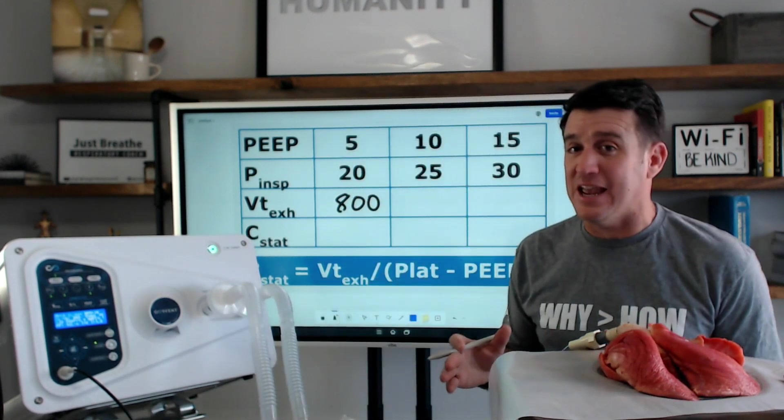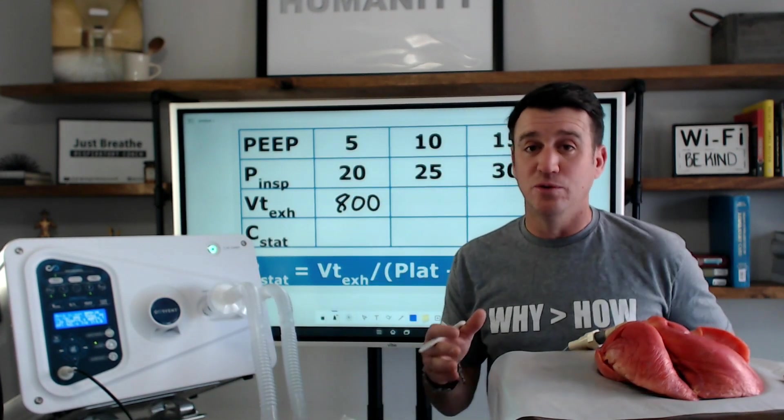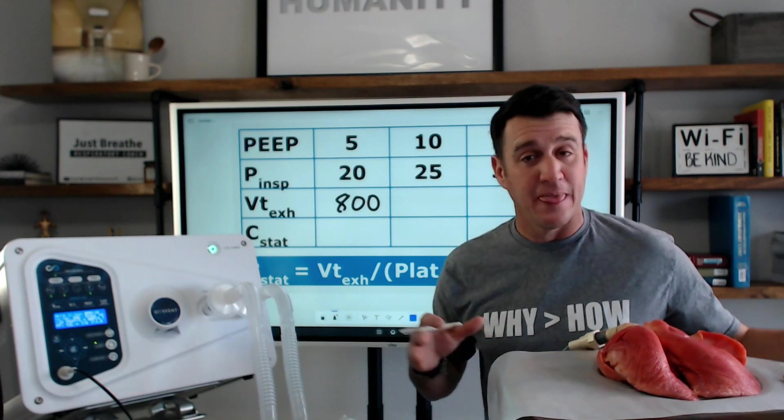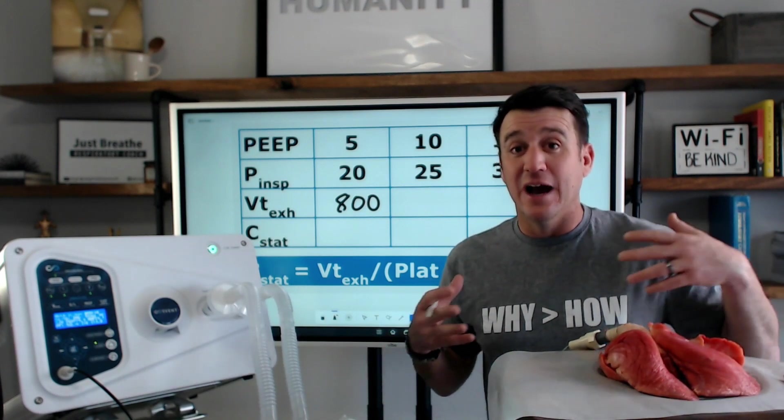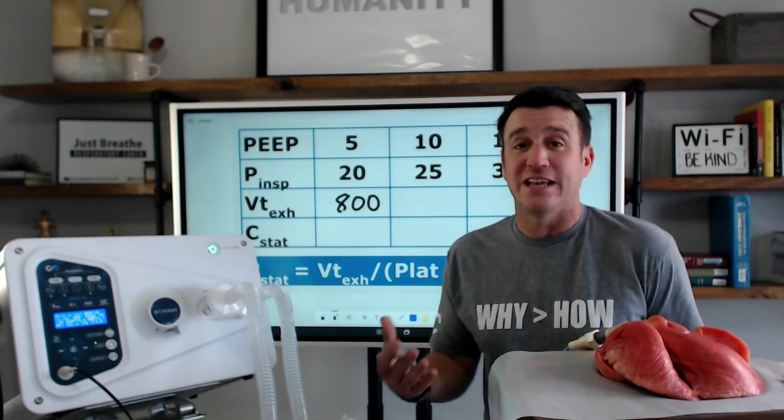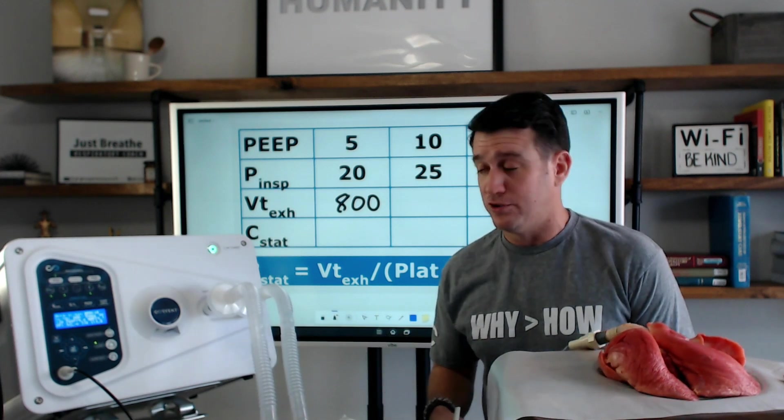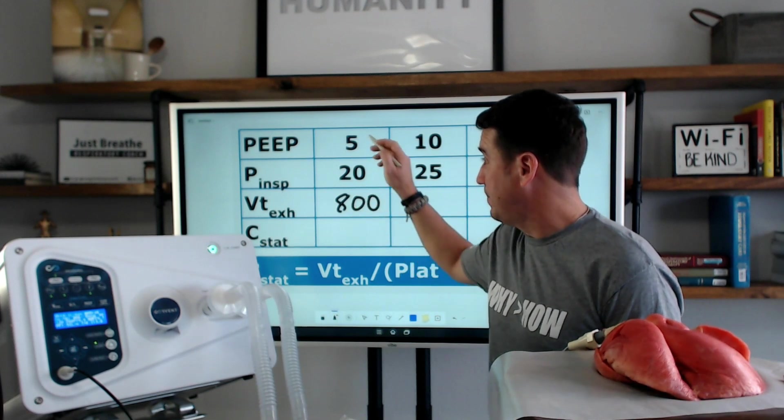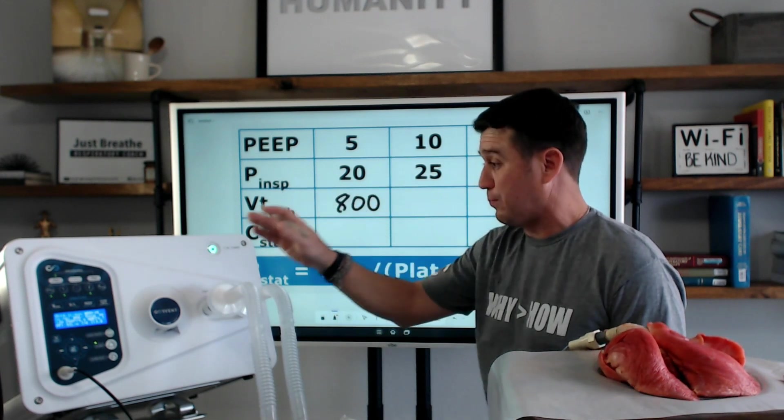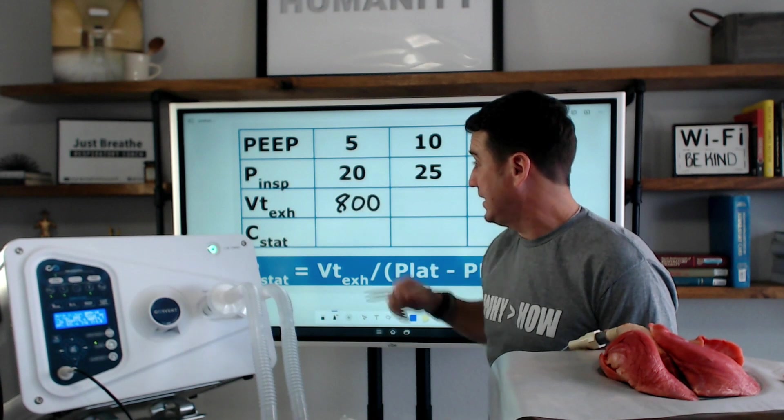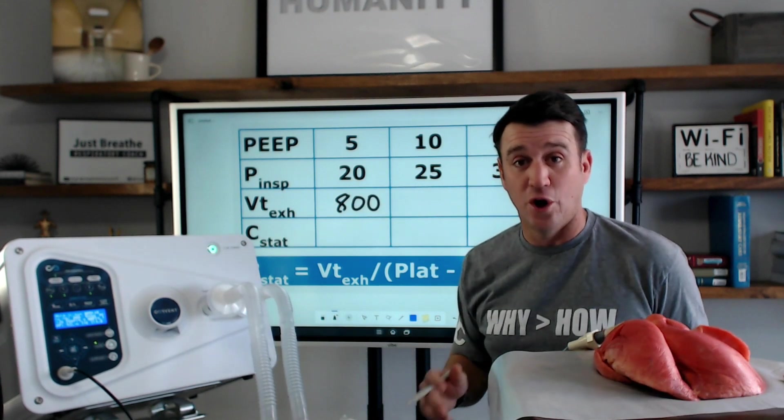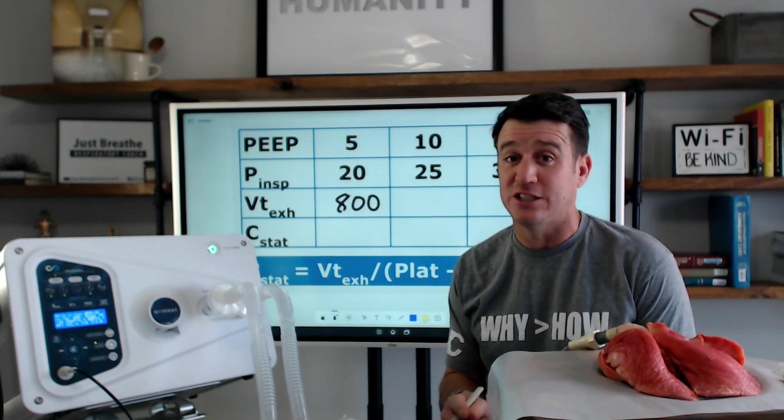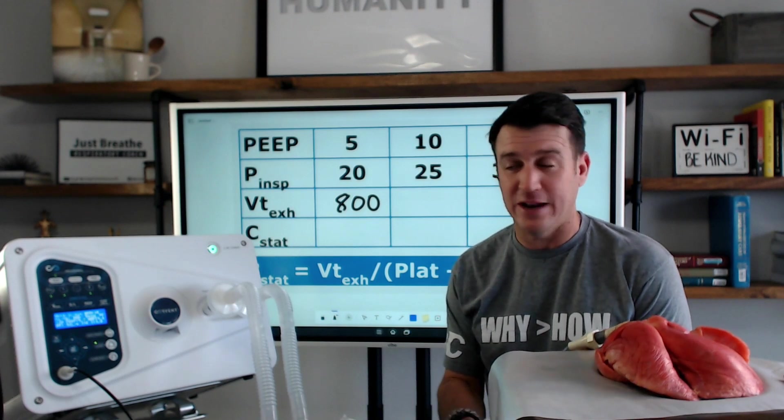I'm not saying that this is a tidal volume that you would want to deliver to your patient. That's not what I'm saying. I'm just doing an experiment with you here on YouTube. That's the volume we're getting back with a PEEP of 5, and an inspiratory pressure change of 15 gives us a peak pressure of 20. So, what we're going to do now is we're going to increase the PEEP from 5 to 10. We're going to see what happens.